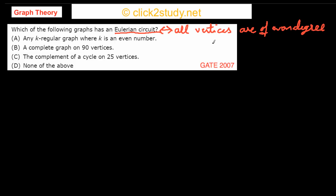Option A talks about a k-regular graph where k is an even number. In a regular graph, all vertices have the same degree, and in a k-regular graph, all vertices have a degree of k. It is given that k is an even number.